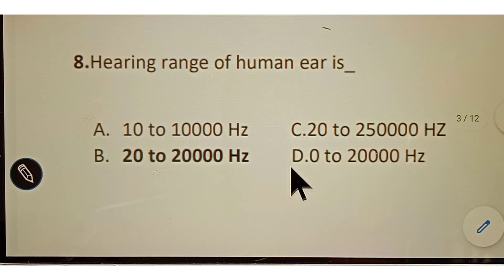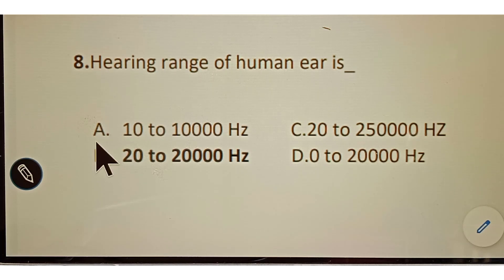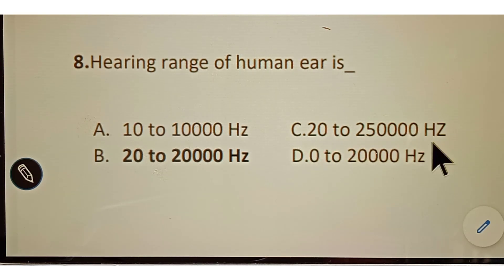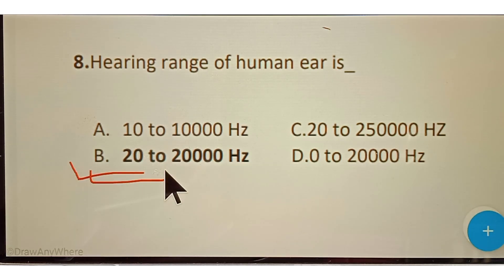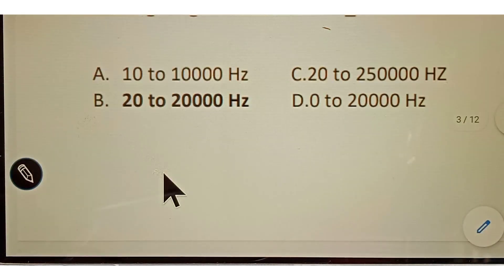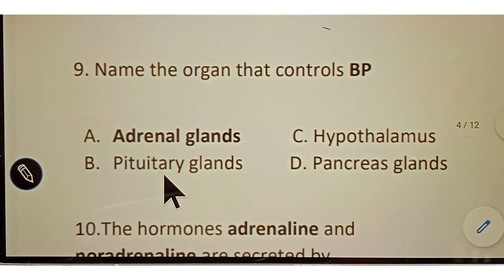Question number eight: the hearing range of the human ear. Options given: A. 10 to 10,000 Hz, B. 20 to 20,000 Hz, C. 20 to 25,000 Hz, D. 0 to 20,000 Hz. The correct answer is option B, 20 to 20,000 Hz. Humans can hear 20 to 20,000 Hz sound.